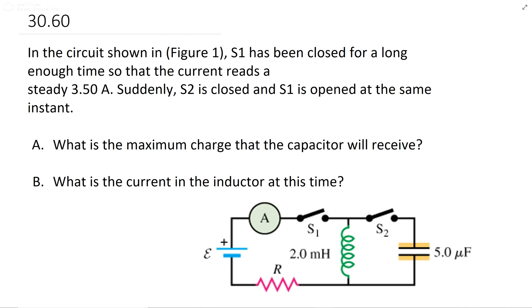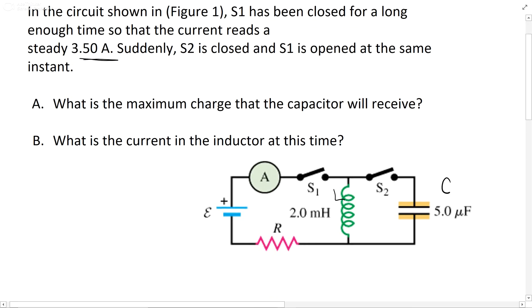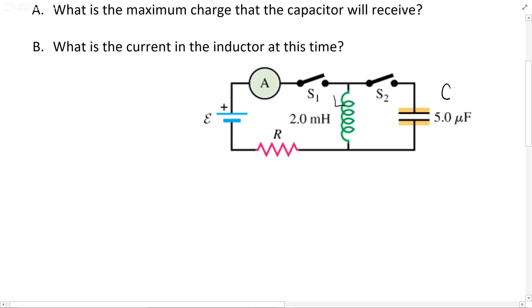The values they give you: current right here, L right here, and C right here, capacitor and inductor. So we have I, L, and C, and you want Q.